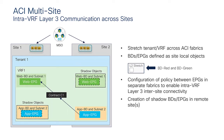Once I establish a contract between web EPG and app EPG, this creates shadow objects and allows endpoints to start communicating. This will be layer 3 communication across sites because the EPGs are mapped to bridge domains with different subnets. It's also possible to define two EPGs as part of the same bridge domain for intra-subnet inter-site communication.